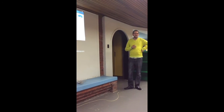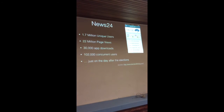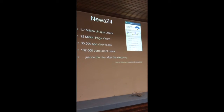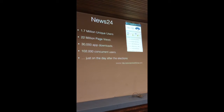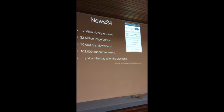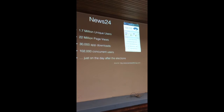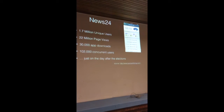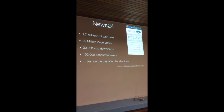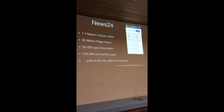So how did they perform? News24: fucking well. This is one day — we're talking about the 8th. 1.7 million unique users. 22 million page views. 30,000 app downloads for their elections app just on that day, 39,000 in total. 102,000 concurrent users on that map at one point. One third of their traffic was on that map for the day — something like a 280% increase in their traffic. 1.7 million unique users is insane — a lot of people.